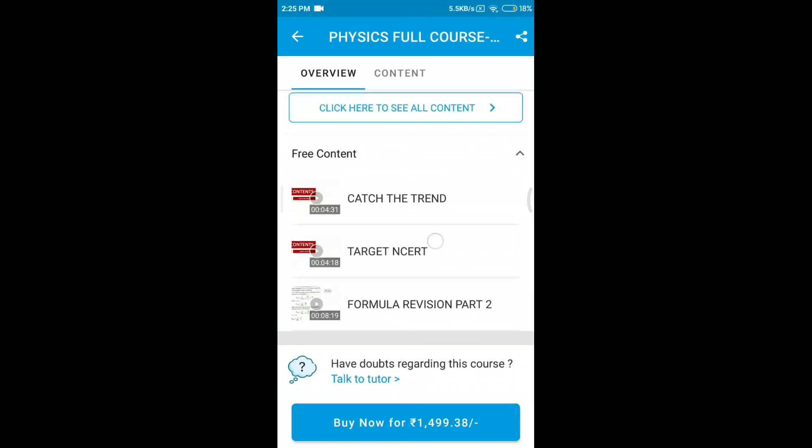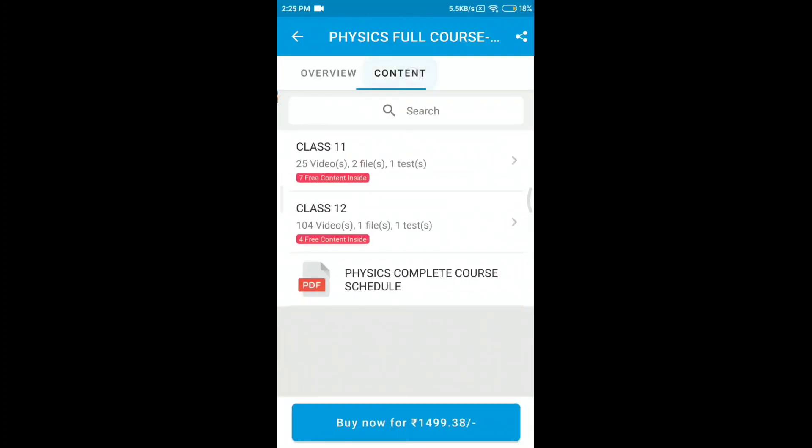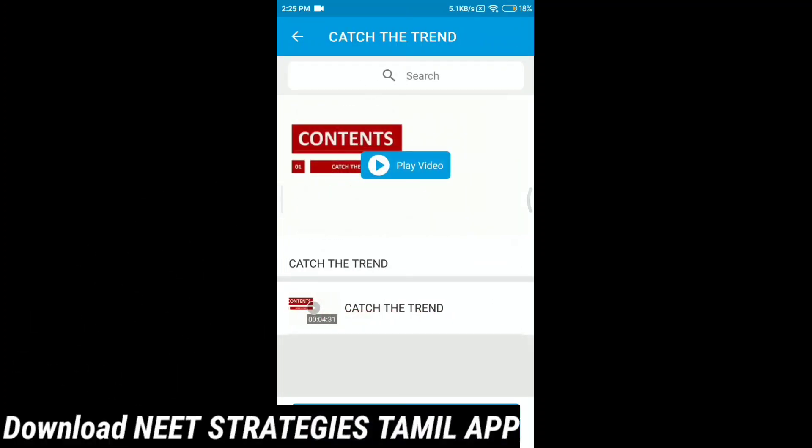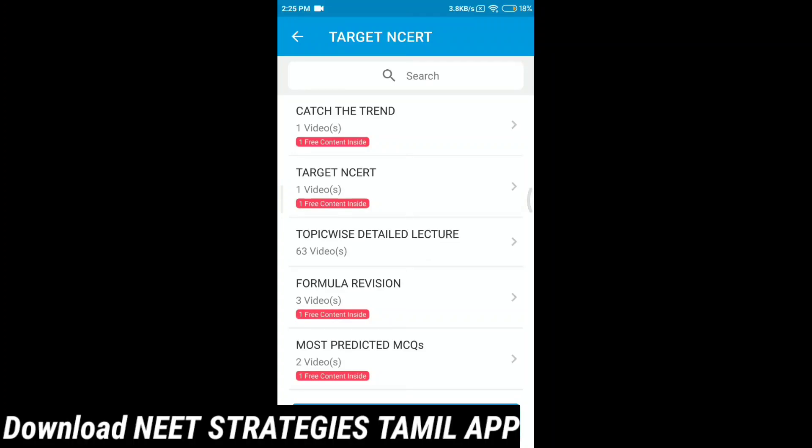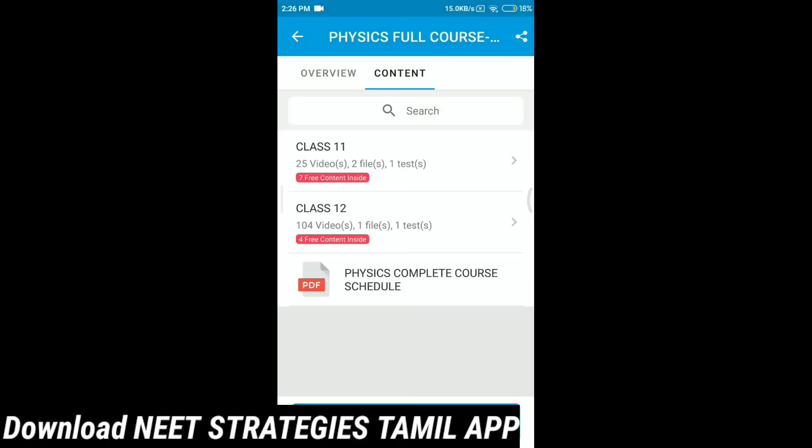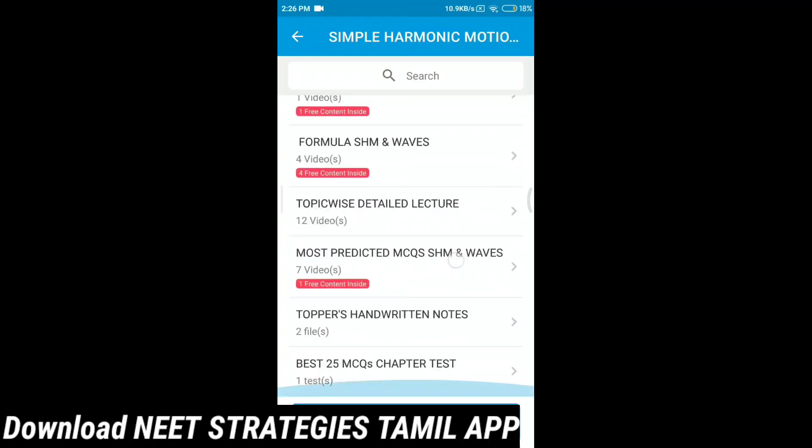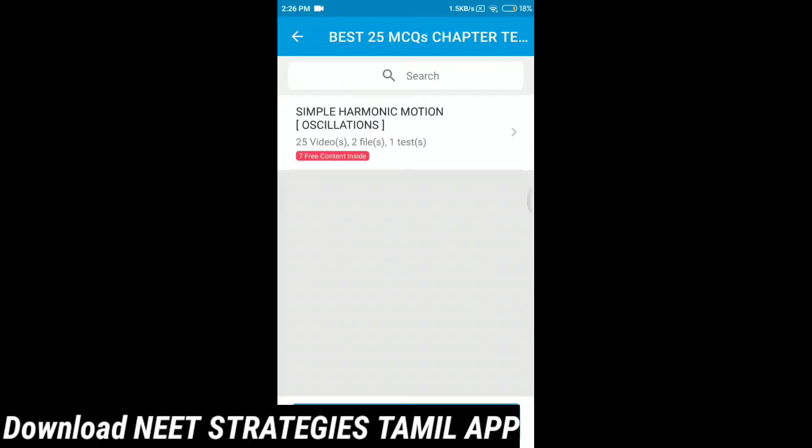You can scroll down to the side of contents. You can press the 11th, 12th, physics complete course, 6 months complete physics NEET point of the field. One chapter has target NCERT topic wise lectures and quick formula revision. One chapter has MCQs solve the problem, toppers handwritten notes, best 25 MCQs question bank test.